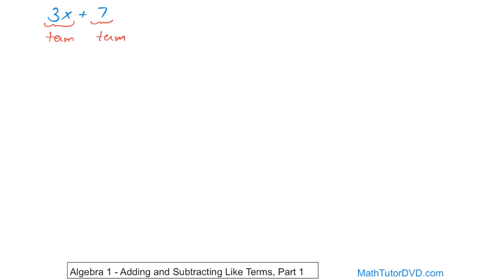Do they look like like terms? Well, they do have numbers, that's true. But you see this term has an x and this term has no x — it has no variable at all. So because they don't have the exact same variables, these are what you call unlike terms.